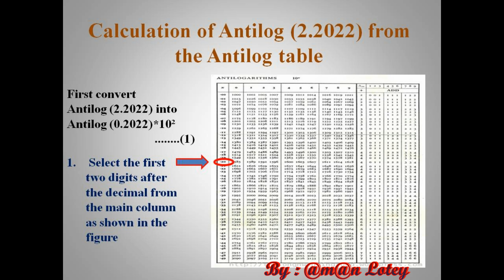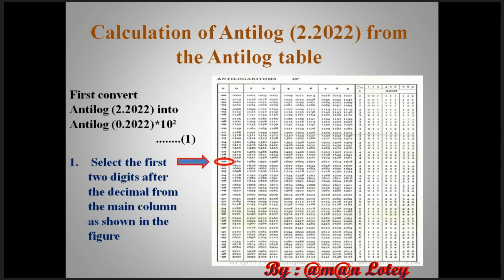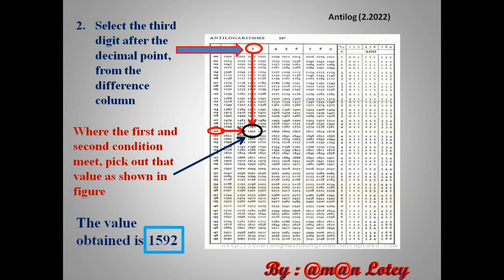There are four digits after the decimal point in the question. The first two digits are taken from the main column, as shown in the figure. The third digit after the decimal point is found from the difference column. Where the first and the second conditions meet, pick out that value. The value obtained is 1592.